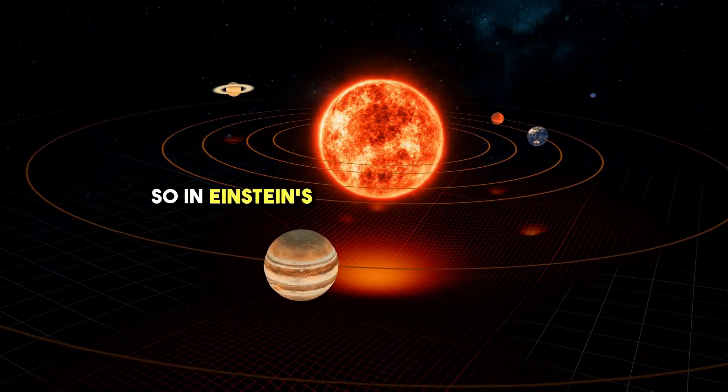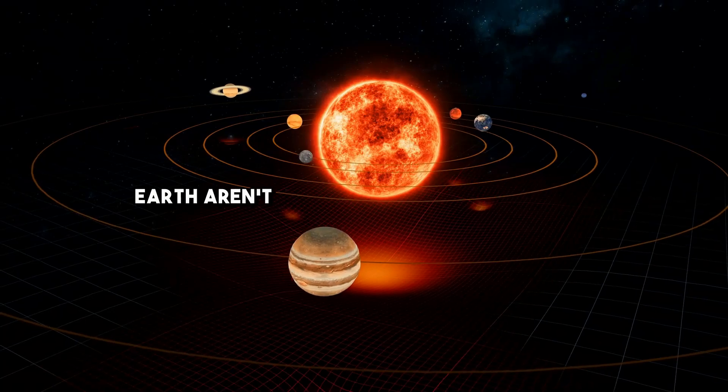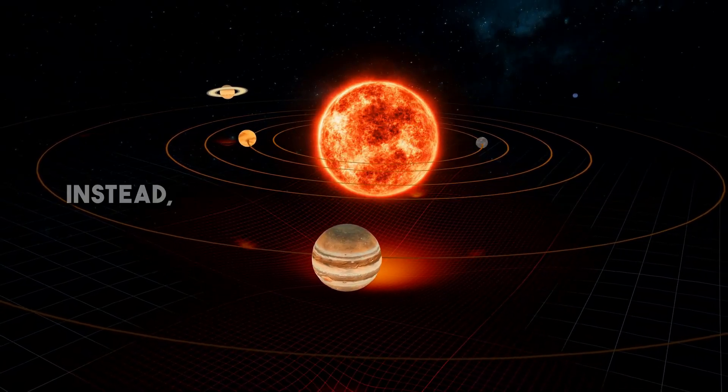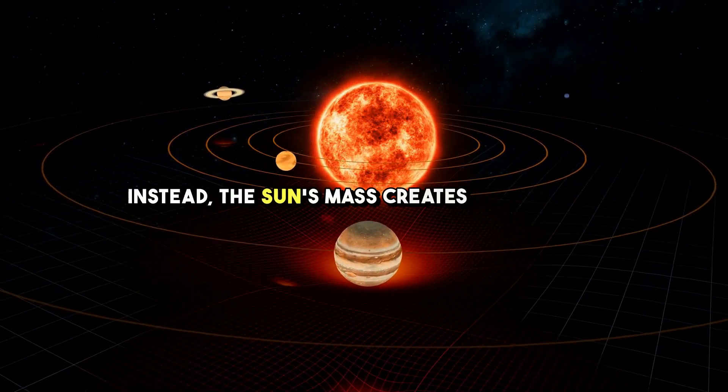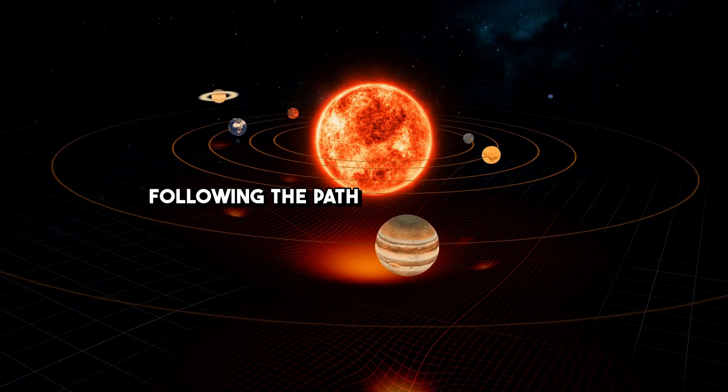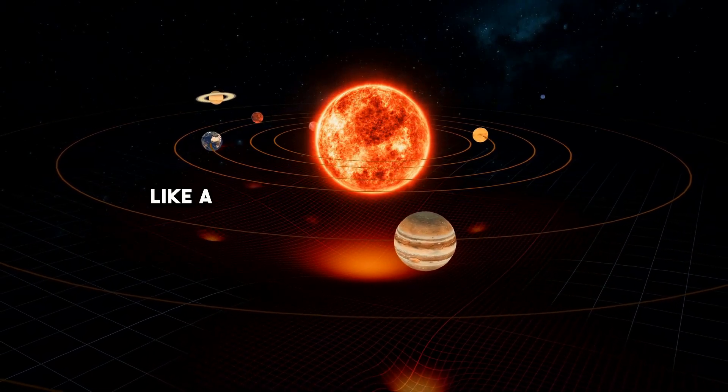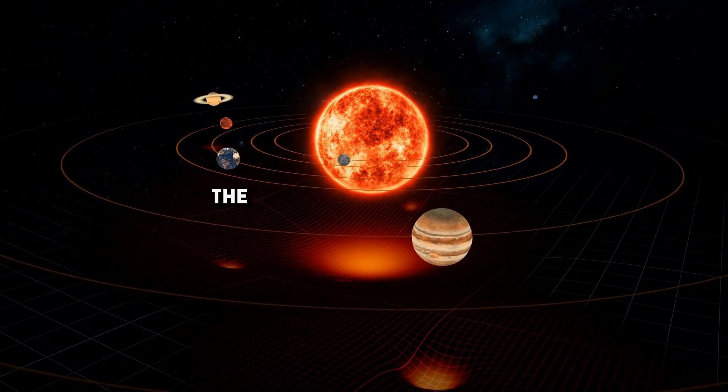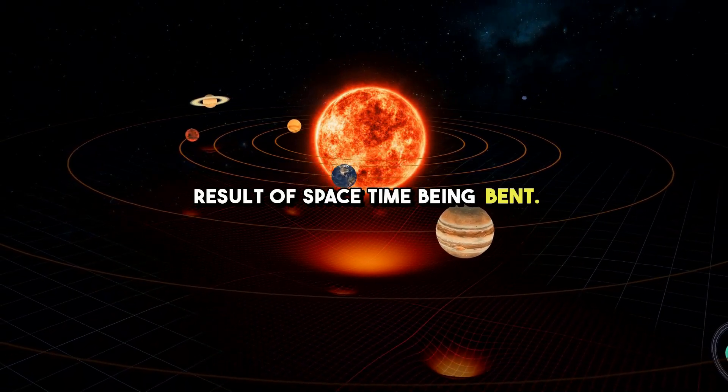So, in Einstein's world, objects like the Earth aren't being pulled toward the sun. Instead, the sun's mass creates a curvature in space-time, and the Earth is following the path of least resistance, like a marble rolling around a funnel. The Earth's orbit is just the result of space-time being bent.